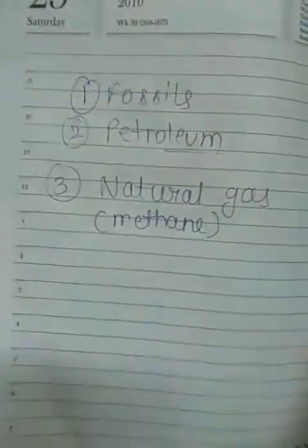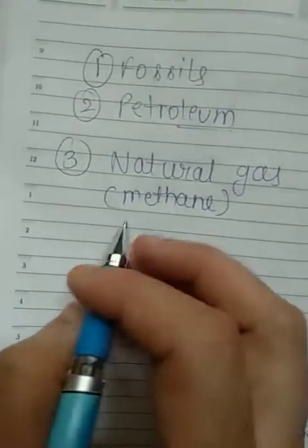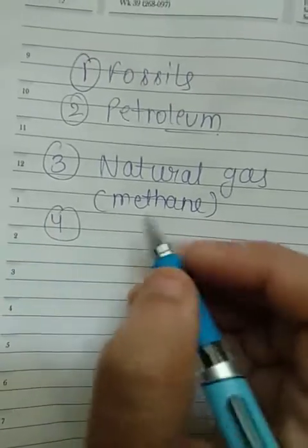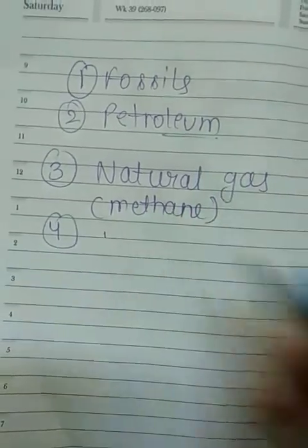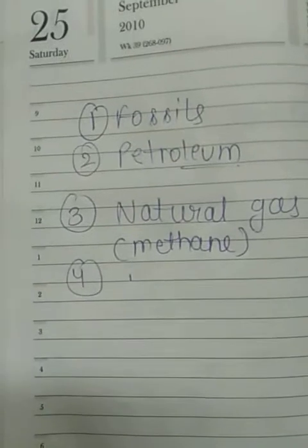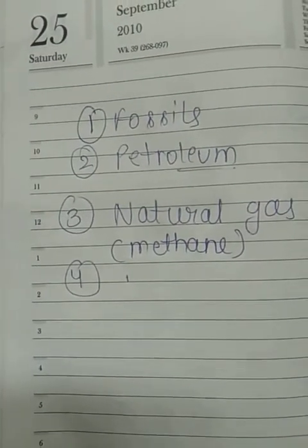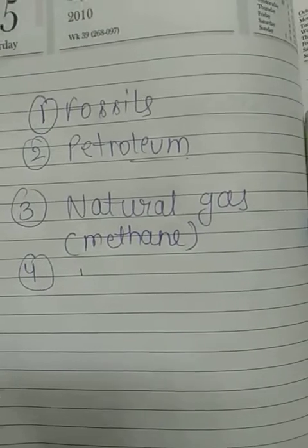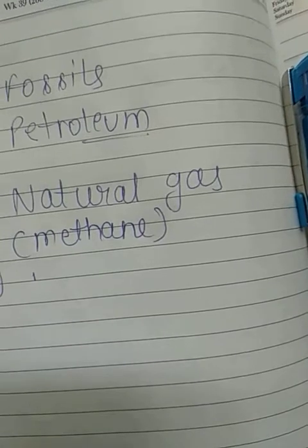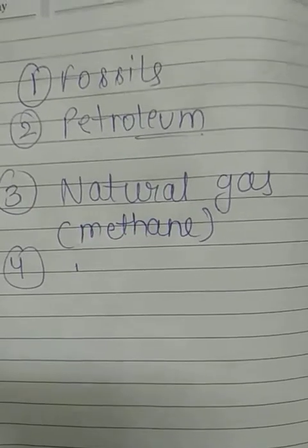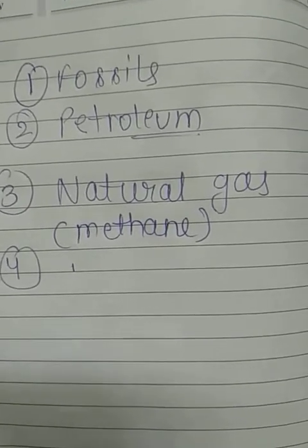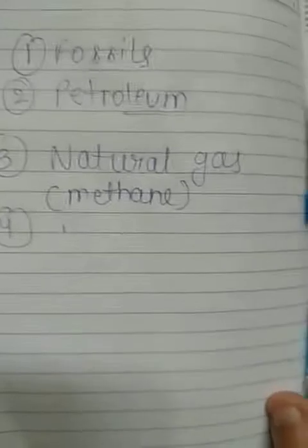We can reduce pollution by using renewable sources of energy. Coal and petroleum, when burned as fuel, produce harmful gases that pollute the atmosphere. Instead of using those resources, we should switch to renewable sources of energy such as wind energy, solar energy, and water energy.